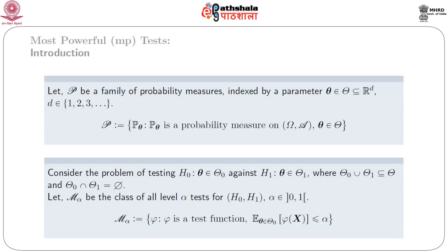Now, consider the problem of testing the hypothesis H naught: theta belonging to theta naught, against H1: theta belongs to theta 1, where theta naught union theta 1 is a subspace of the whole space and theta naught intersection theta 1 is equal to null space. Let M_alpha be the class of all level alpha tests for H naught against H1, where alpha belongs to the closed interval [0,1]. By the size or level of a test, we mean its expected value is less than or equal to alpha for all theta belonging to theta naught.